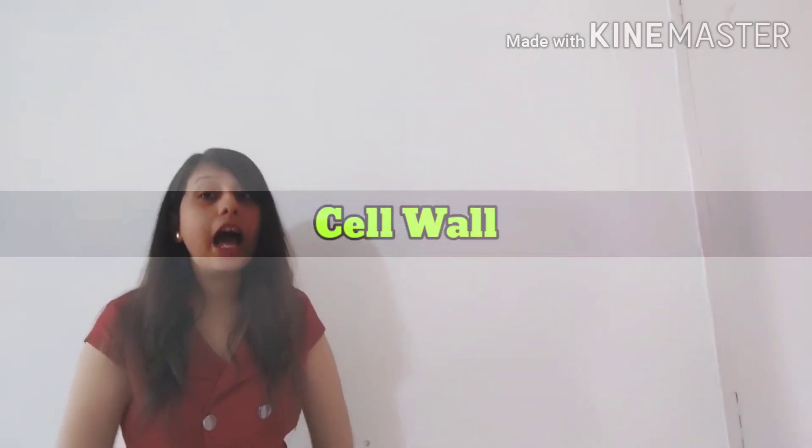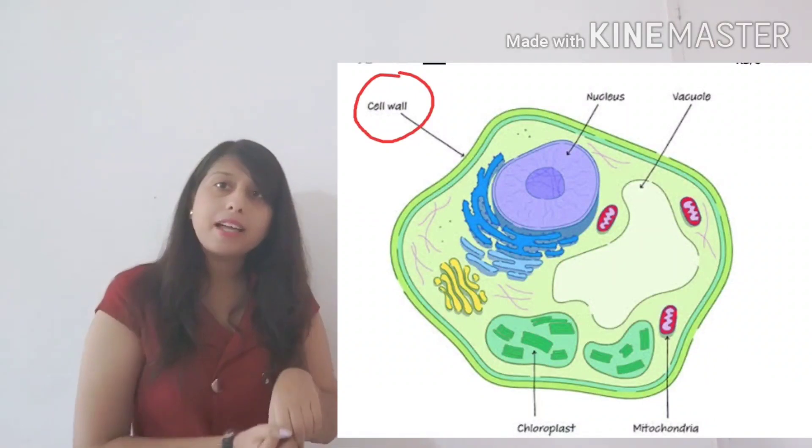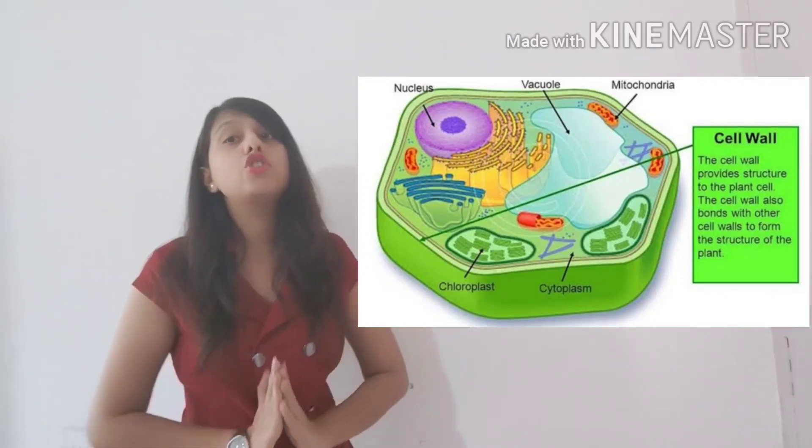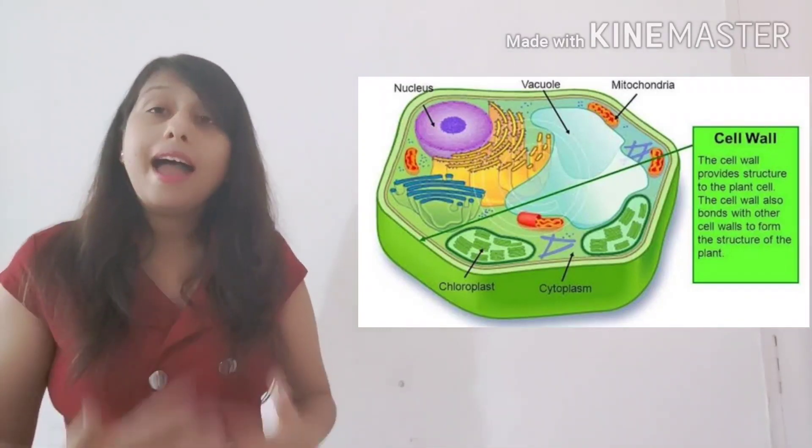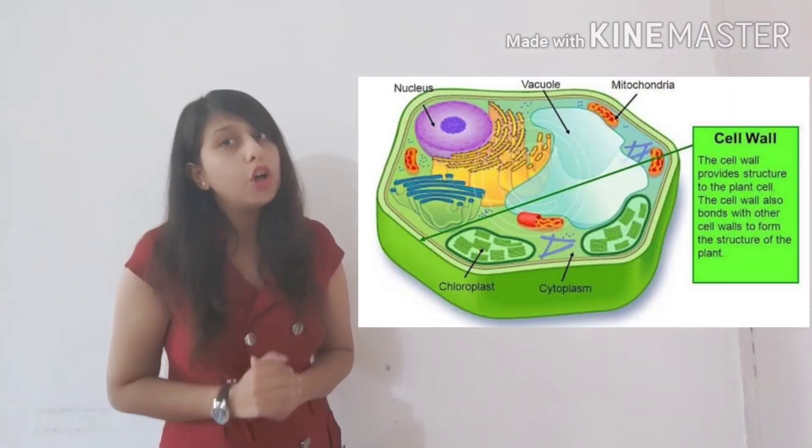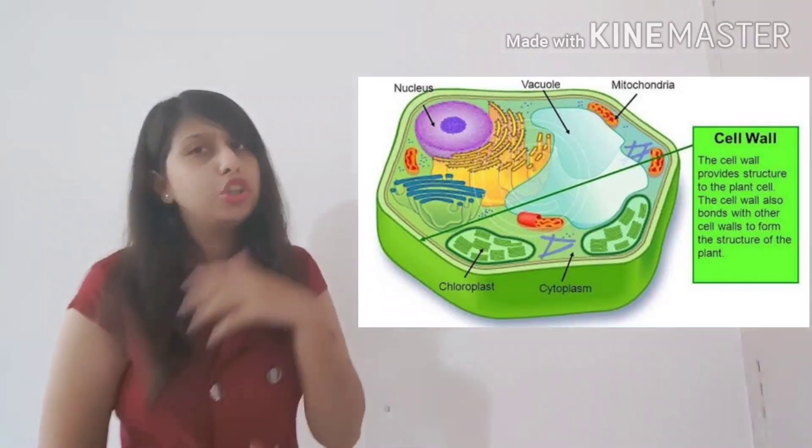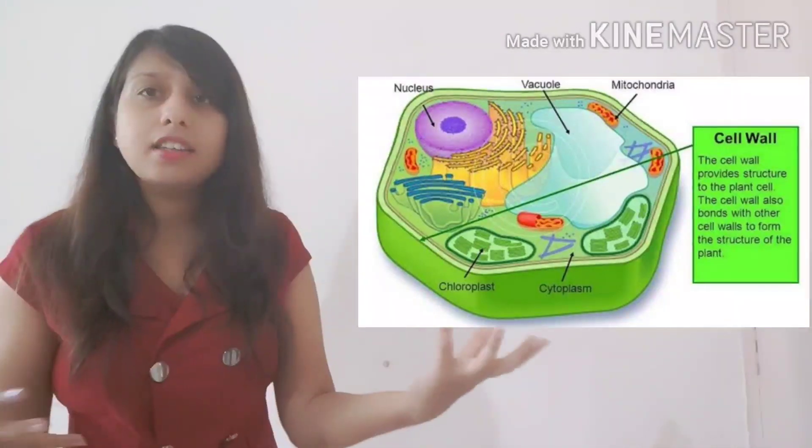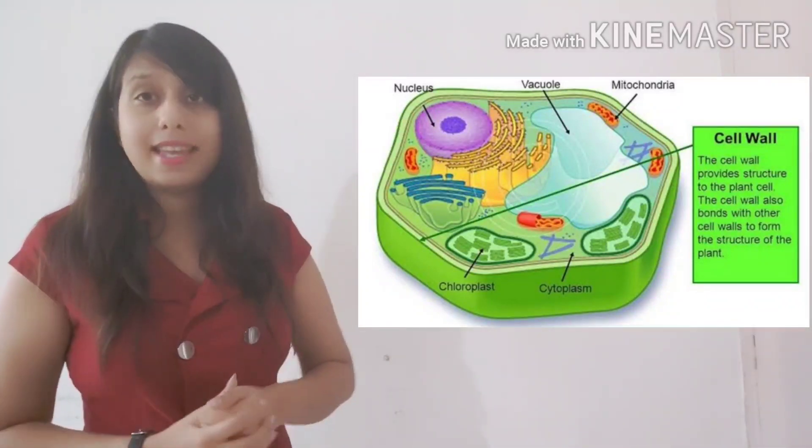Now next we will move on to cell wall. This cell wall is present outside the plant cell and it protects the plant cell from external environment. Cell wall is only and only present outside the plant cell. It is not present in the structure of animal cell. As animals can locomote whereas plants cannot, so it has to be protected from the wind speed or the humidity or all the other extreme conditions which are faced by plants. As they cannot move to protect themselves from the harsh conditions. The cell wall is actually made up of cellulose which is a tough material.